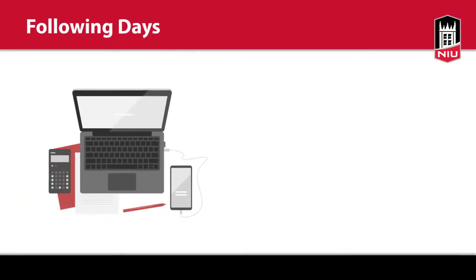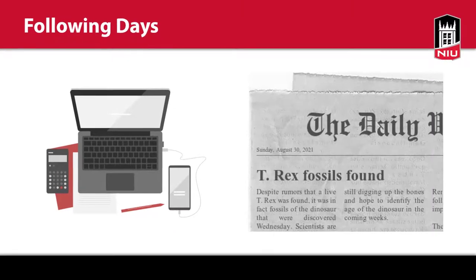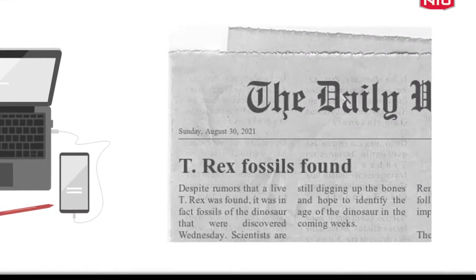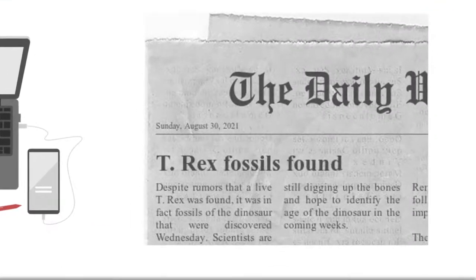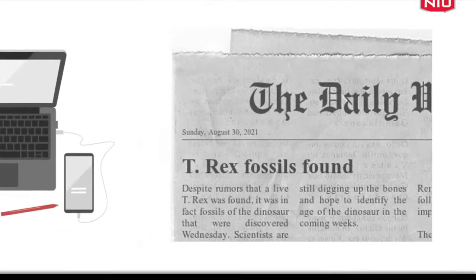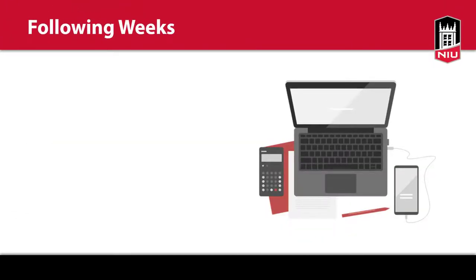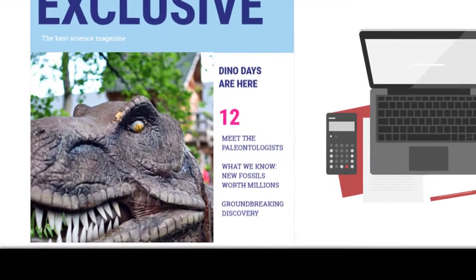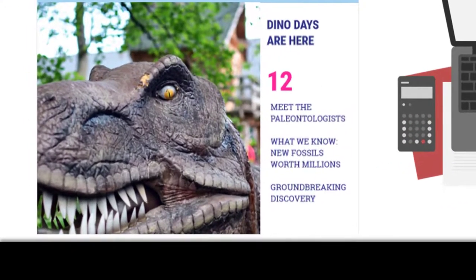In the following days, news outlets publish more in-depth reports from professional journalists with the most current and verified information available. In the following weeks, popular news magazines publish detailed analyses or stories about the impact of the event on society and culture. These may be written by professional journalists or writers.